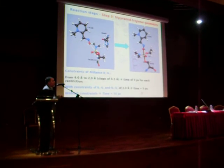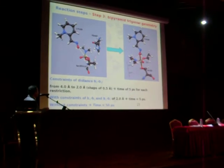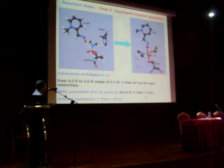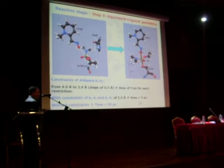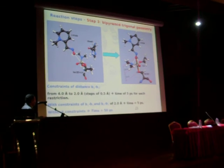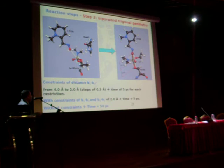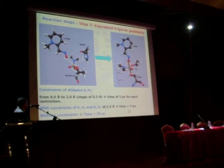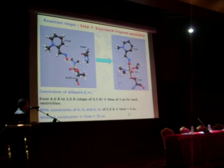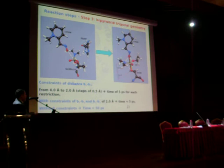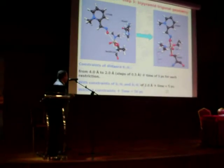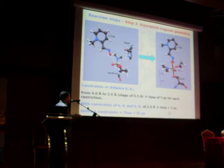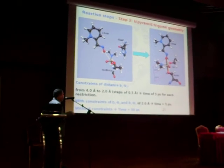Step 3 represents a bipyramidal trigonal geometry formation. This step was carried out with constraints of distances B1 and B3, from 4.0 angstroms to 2.0 angstroms at steps of 0.5 angstroms, at 5 picoseconds for each restriction. We then applied constraints of B1-B3 and B3-B7 of 2.0 angstroms for 5 picoseconds, then the constraints were released and a final molecular dynamics simulation of 50 picoseconds was carried out.